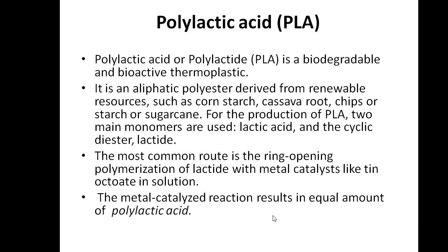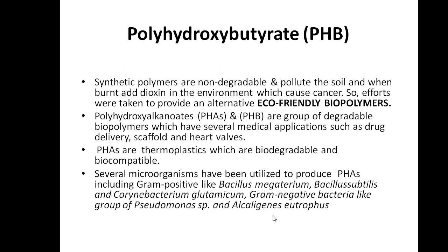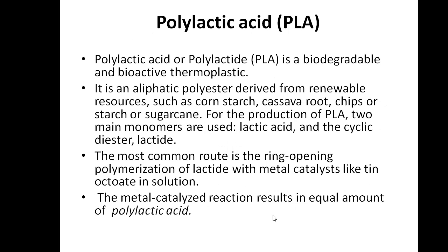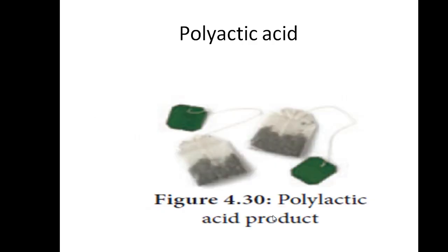Polylactic acid (PLA) is a biodegradable and bioactive thermoplastic — an aliphatic polyester derived from renewable sources. Polyhydroxybutyrate is taken from microorganisms (gram-positive and gram-negative bacteria), but polylactic acid is taken from plants like corn starch, cassava roots, chips, starch, and sugar cane. PLA has two main monomers: lactic acid and cyclic diester. The most common route is ring-opening polymerization of lactide with a metal catalyst like tin octoate in solution, resulting in equal amounts of polylactic acid.